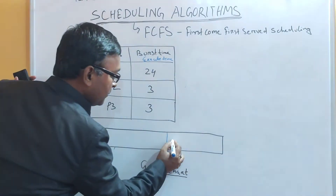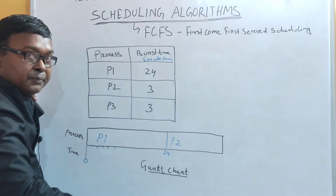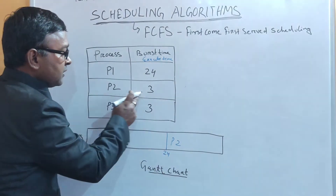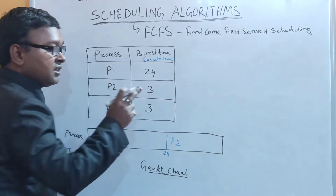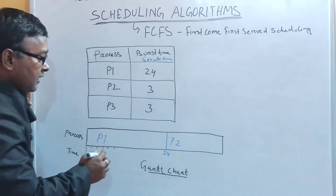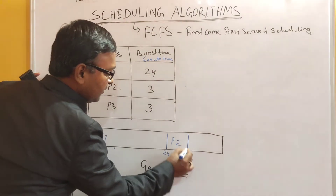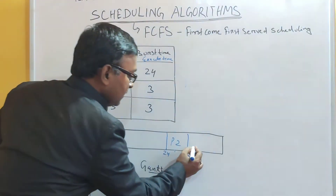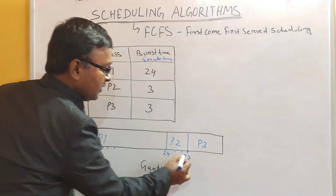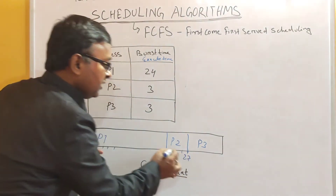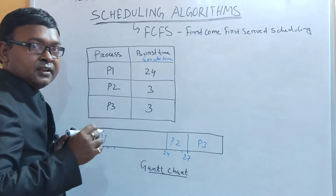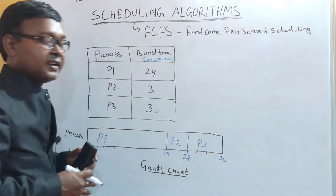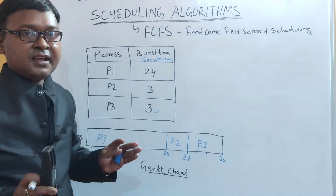P2 acquires the processor at time 24 and takes 3 units of time to complete, so it runs from 24 to 27. At time 27, P2 completes its execution. Next is process P3, which starts at time 27 and takes 3 milliseconds of time. So P3 runs from 27 to 30. At 30 milliseconds, all processes have completed their execution.